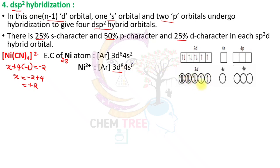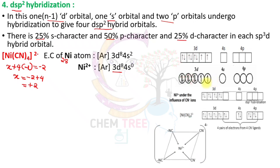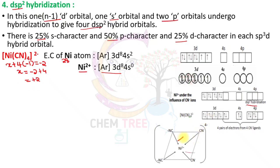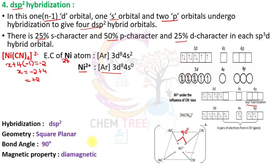The d orbital contains 8 electrons. The 4 cyanide ligands act as strong-field ligands, causing pairing of electrons in the d orbital, making one d orbital vacant. This vacant d orbital, along with 1 4s and 2 4p orbitals, intermixes to form DSP² hybrid orbitals. These DSP² hybrid orbitals accept electron pairs from the 4 cyanide ligands, forming a square planar complex with bond angle 90° and diamagnetic properties.